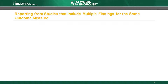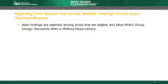The WWC always determines the main findings in a study from among those that are eligible according to the criteria in the review protocol and meet WWC design standards. For example, if the full sample finding in a study does not meet WWC design standards but a subgroup finding does, then the subgroup finding is the main finding in the study and contributes to the WWC's summary of the evidence.